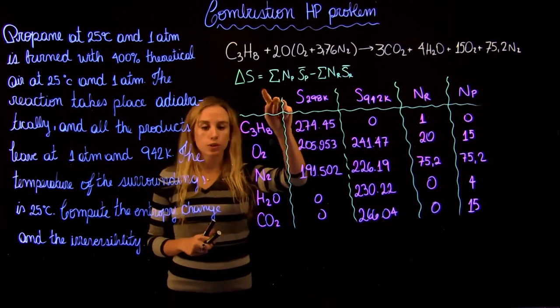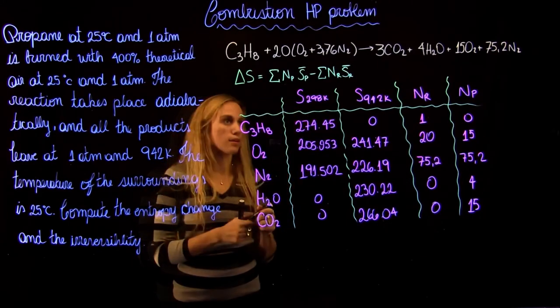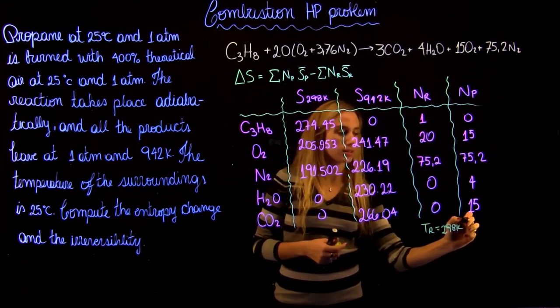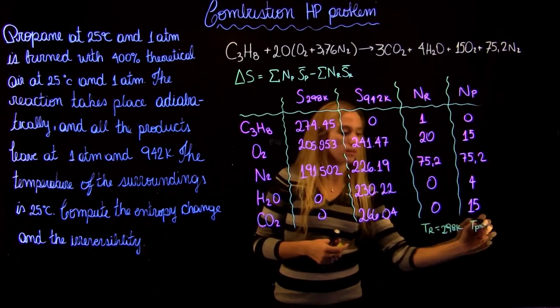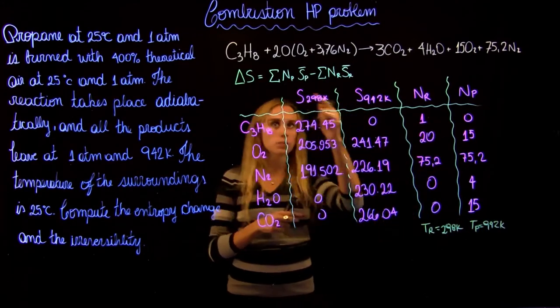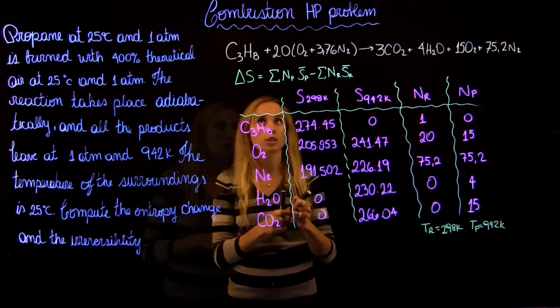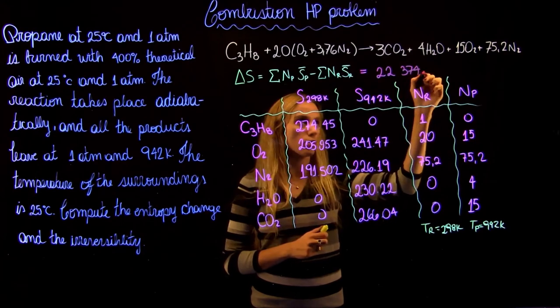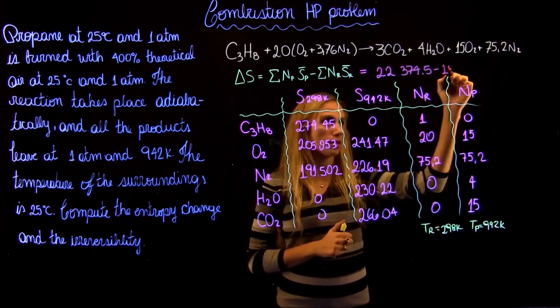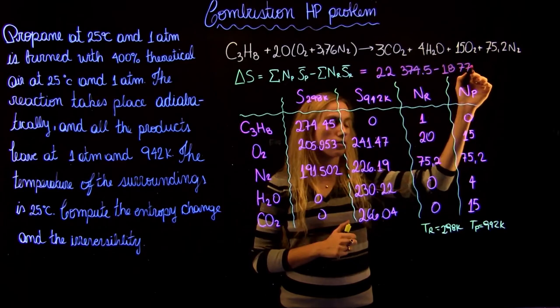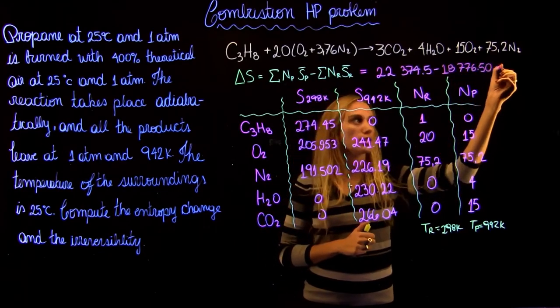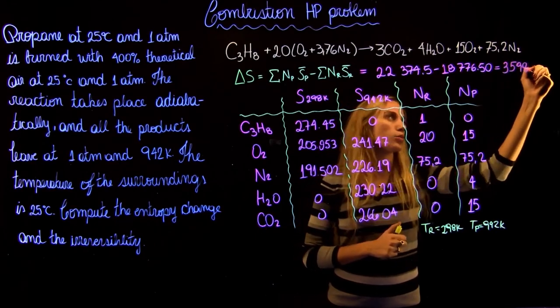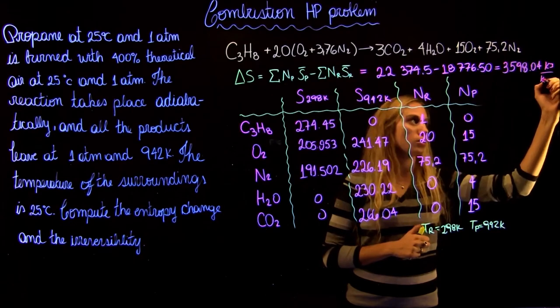So now that we have found all the values, we can go back to our equation and plug in the numbers. We know that the temperature of our reactants is 298 kelvins and the temperature of our product is 942 kelvins. So we just need to multiply and do the addition here. And this is going to give us 2,200,374.5 minus 1,800,776.50. And that's going to give a change in entropy of 3,598.04 kilojoule per kilomole.